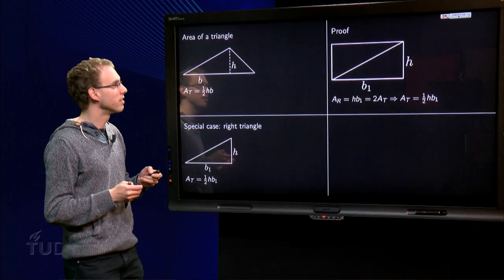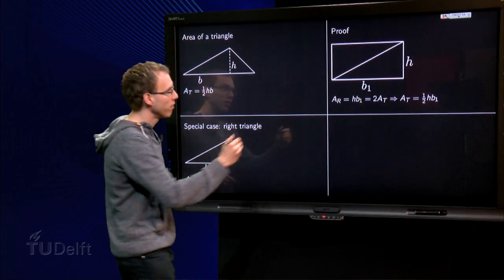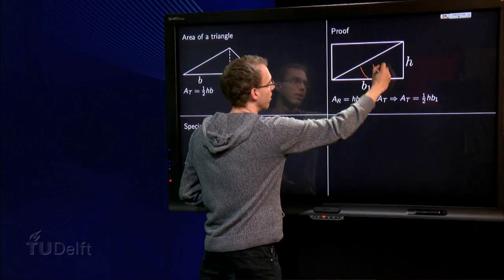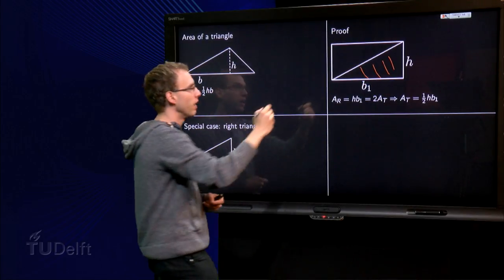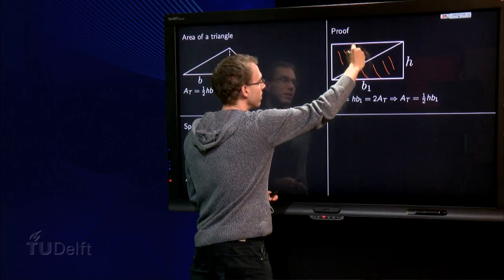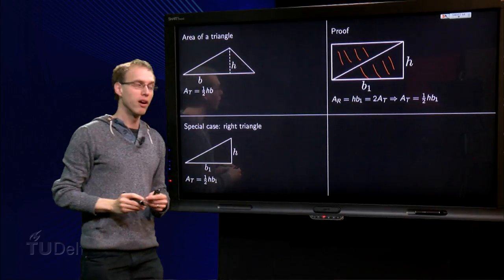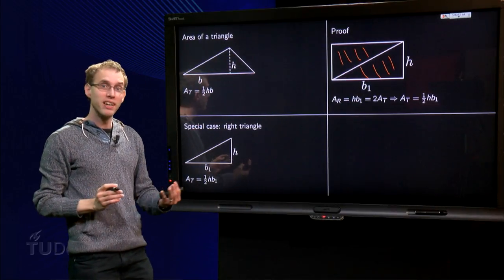How are we going to do that? Well, we have our right triangle over here. We flip it and we add another one, the same one over there. Now we have a rectangle.